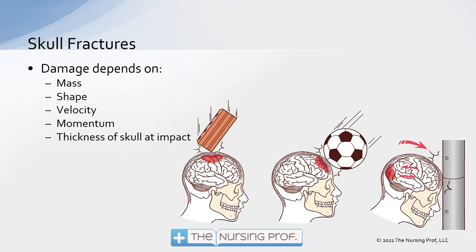Skull fractures and the type of damage that will occur to our patient will depend upon the mass. The larger the mass that's hitting the skull, the more internal injury we'd expect to see. The primary problem we have to worry about with skull fractures is the internal injury to the brain — not so much the skull fracture itself. If you fracture your arm, you're more concerned with the bone. Here we're concerned more about what's happening underneath and the damage to the brain.